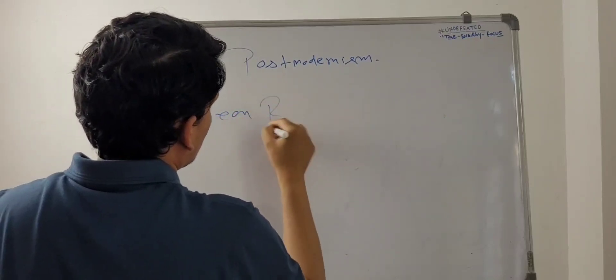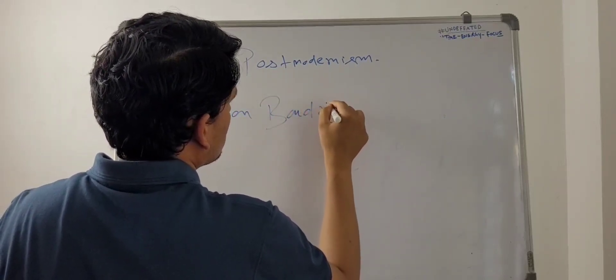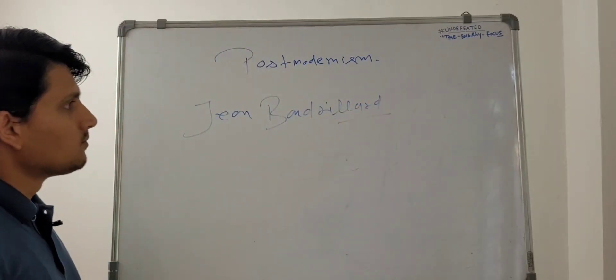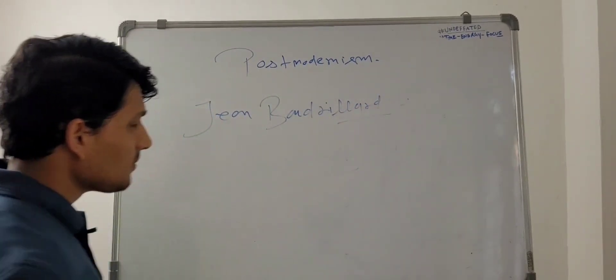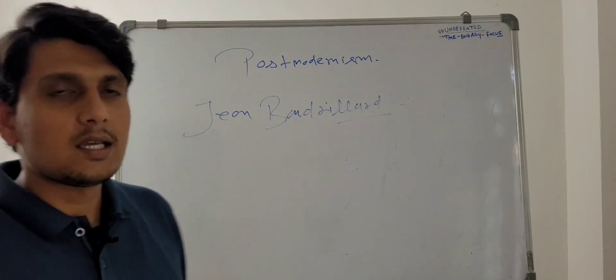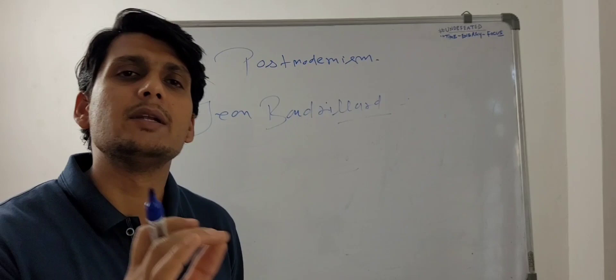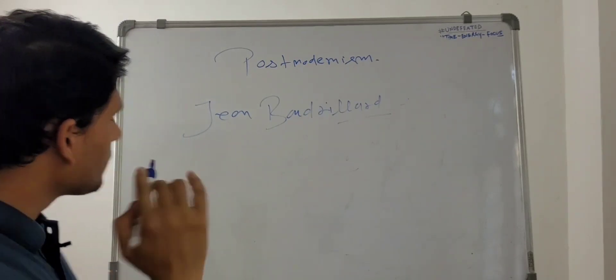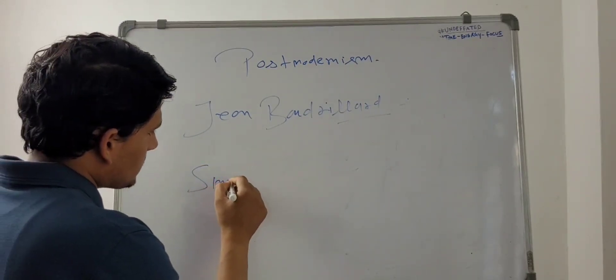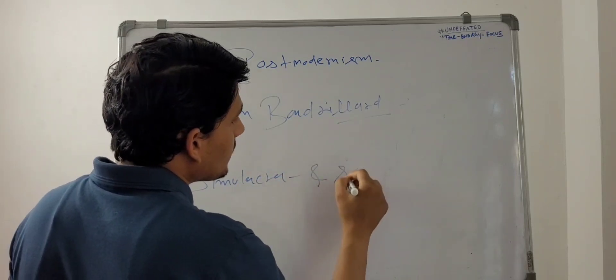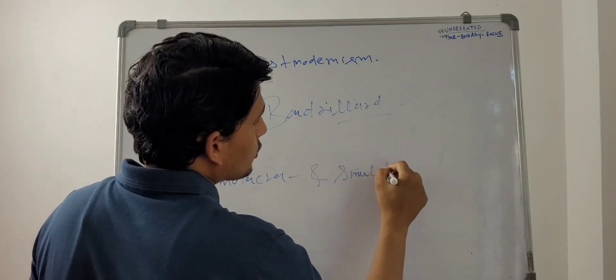Jean Baudrillard, a French theorist, said that the world we are living in is not real, it is merely the imitation of the reality. His work Simulacra and Simulation, both of these are the terms as well, published in 1981.